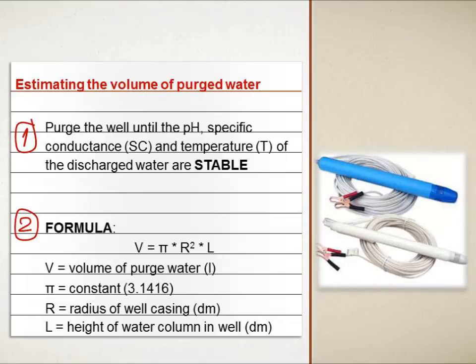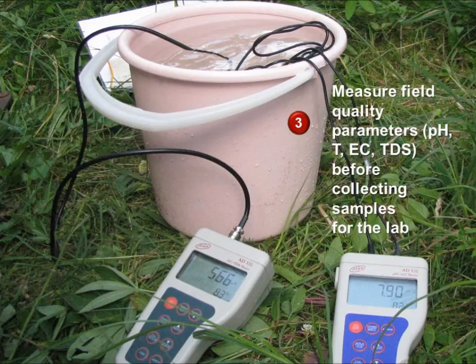There are two ways to estimate the volume of purge water. The first is to purge the well until pH, specific conductance, and temperature readings of the discharged water are stable. The second is to calculate the volume through a formula that takes into consideration the radius of the well casing and the height of the well's water column. Field quality parameters should be measured at the sampling point after a well is purged and prior to collecting samples. These parameters include measurements of pH, temperature, specific conductance, dissolved oxygen, and total dissolved solids.